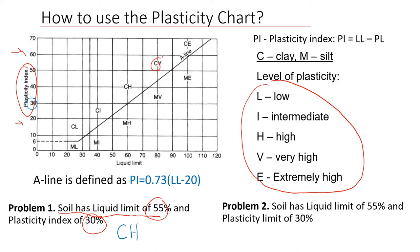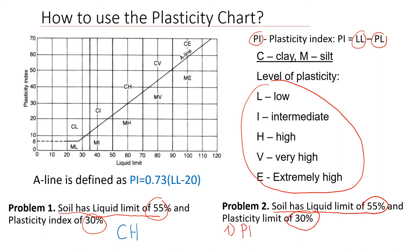Now let's look at the second example. It sounds very similar to the first one, but there is a trick you need to be aware of. In this case we also have a soil with a liquid limit of 55 percent, but we are given the plastic limit of 30 percent. Plasticity index and plastic limit are two different things. Plasticity index is defined as the difference between liquid limit and plastic limit. So the first thing we need to do is find the plasticity index: PI = LL minus PL = 55 minus 30 = 25 percent.